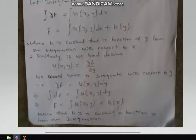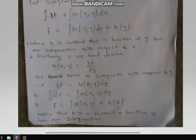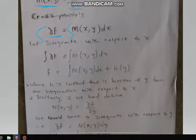Similarly, if we define N to be ∂f/∂y and cross-multiply, we also arrive at an expression with a constant h as a function of x. Note: if you want the constant to be a function of y, use M; if you want it to be a function of x, use N. For the rest of this video, we are going to stick with using M.